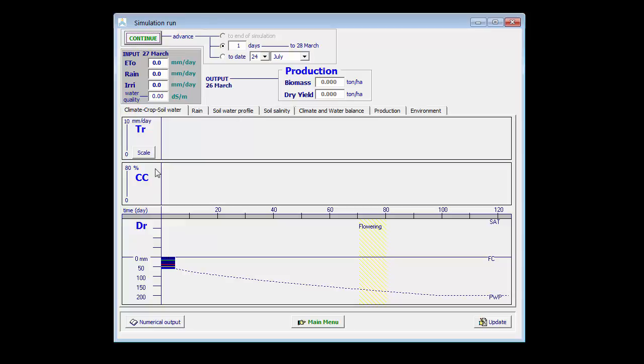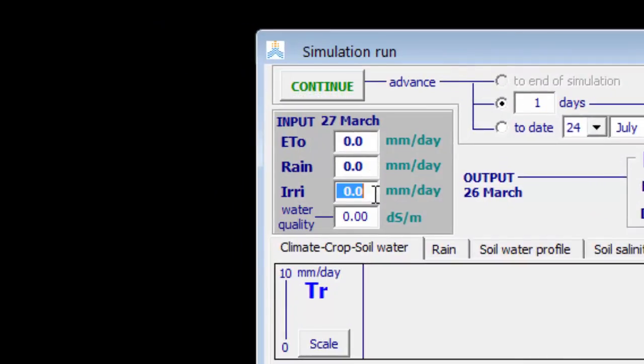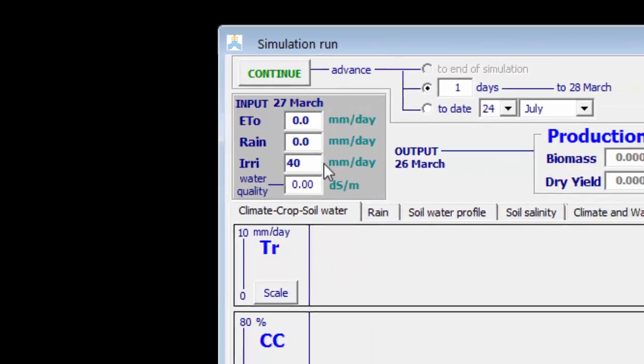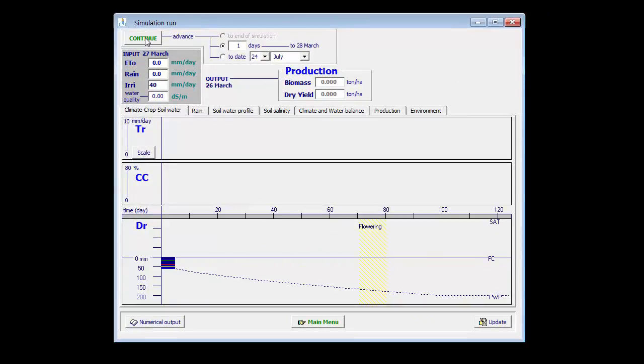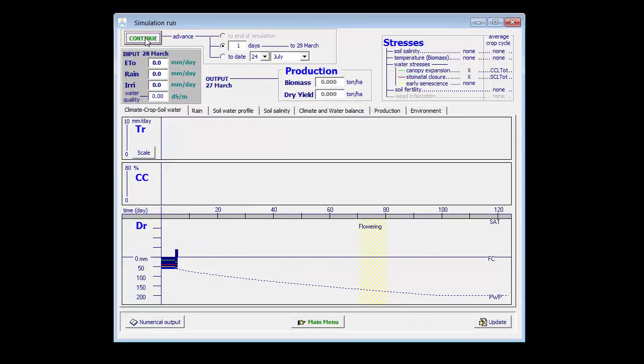If I have an irrigation of, let's say, 40 mm and I continue my simulation, that water will infiltrate and in the next day it slowly drains away.